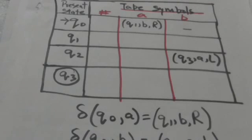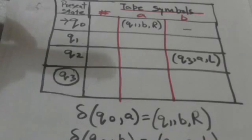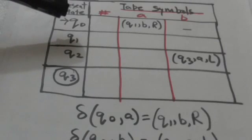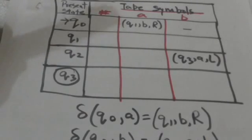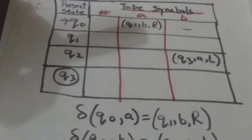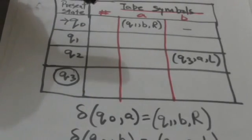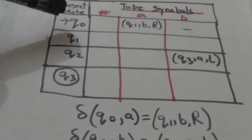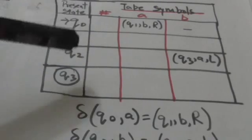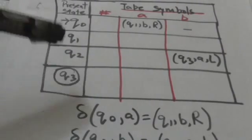A Turing machine can also be represented in tabular form. In tabular form, the Turing machine is represented by a table where rows are labeled by the states of the Turing machine and columns are labeled by the tape symbols. The initial state is represented by putting an arrow before it, and final states are encircled.